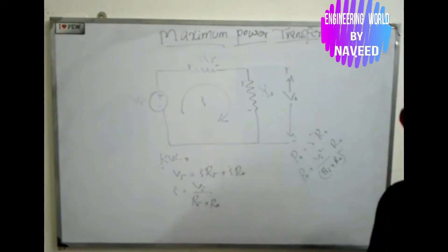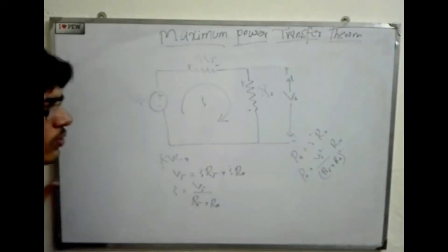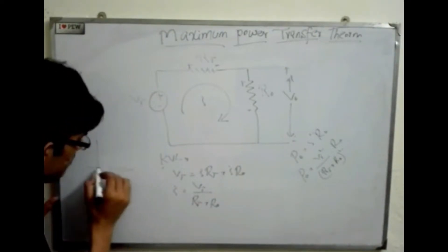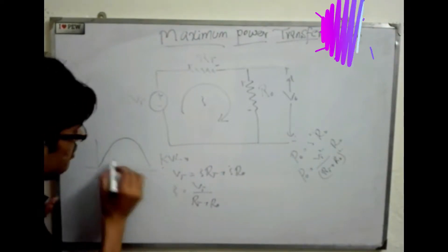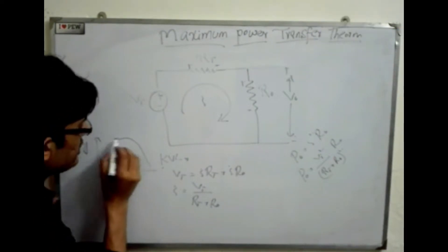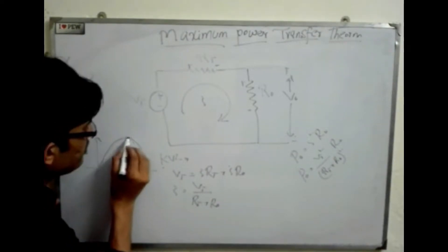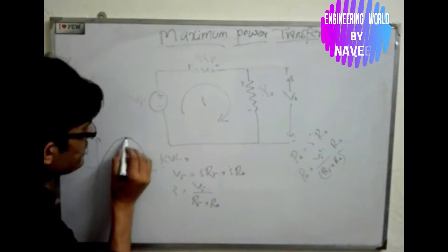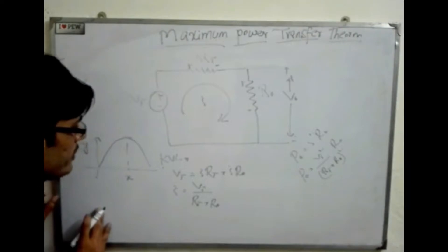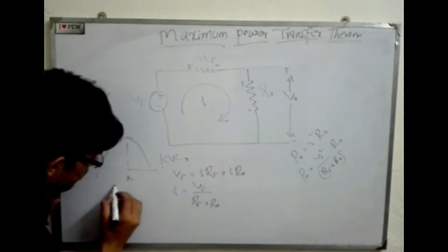As we know in mathematics, for finding the maximum value of P, let's see this graph. Here we have a y-axis and an x-axis. The maximum value of y is at a particular point, and that is the value of x at which y is maximum or P is maximum. To find this maximum point, we take the derivative dy/dx.